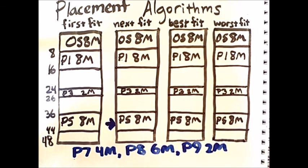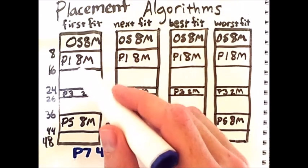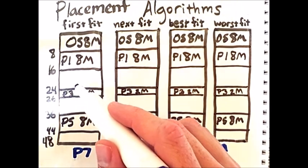Let's go through these requests one by one. Process 7 requests 4 megabytes. First fit will simply place this in the first empty slot that fits it, which is right here.